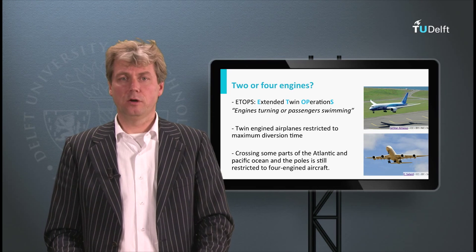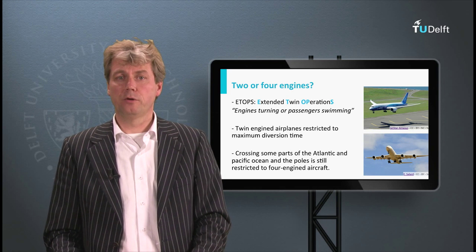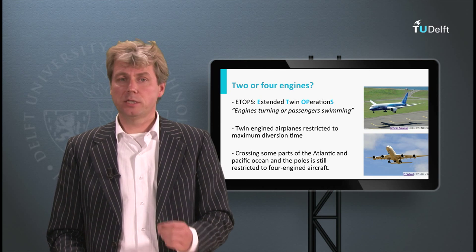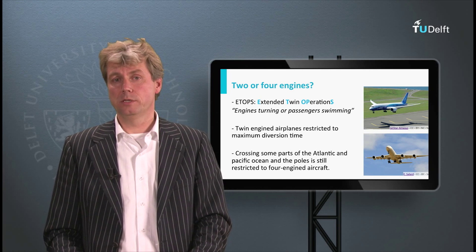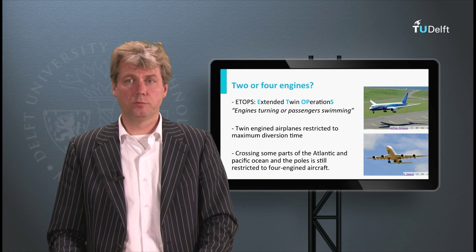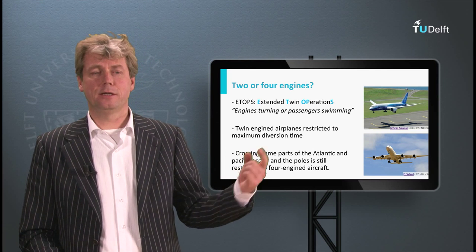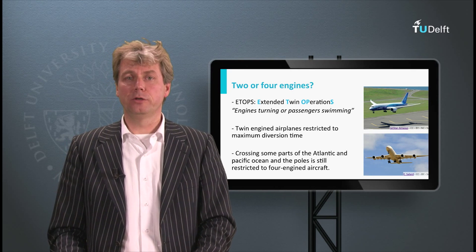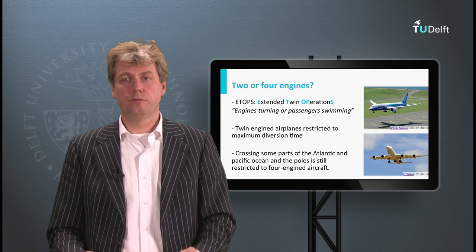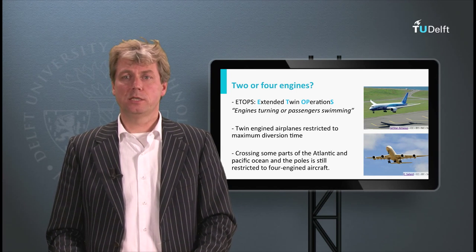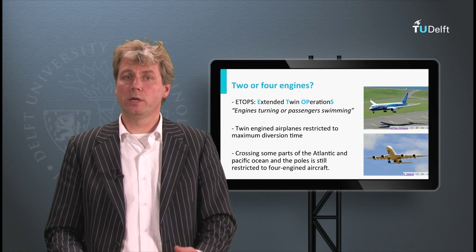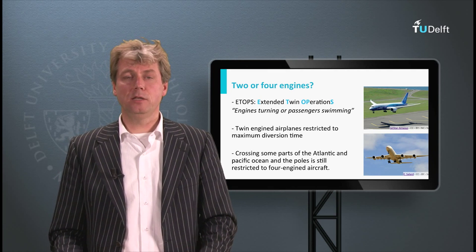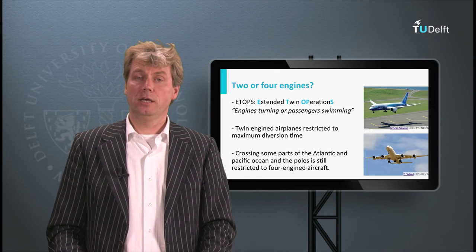In the past, crossing the Atlantic or Pacific required aircraft with three or four engines. Nowadays we often see two-engine aircraft cross the Atlantic. There are still certain areas where two-engine flights are restricted, but ETOPS rules — Extended Twin Operations, sometimes jokingly said to stand for 'Engines Turning Or Passengers Swimming' — allow this due to the higher reliability of modern engines. The chance that two engines fail on an older aircraft is just as high as one engine failing on a modern one.